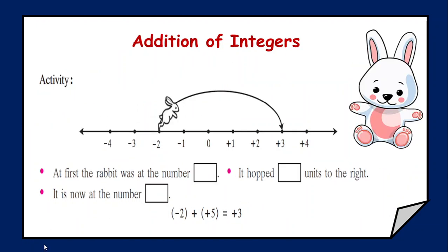Let's see one more activity. Here initially the rabbit was at the position minus 2. Then he shifted towards the right by 5 units, so again as it is to the right, we are going to take it as plus 5. And finally he has reached the position plus 3. So what it means: when you add minus 2 and plus 5, it is going to give you plus 3.